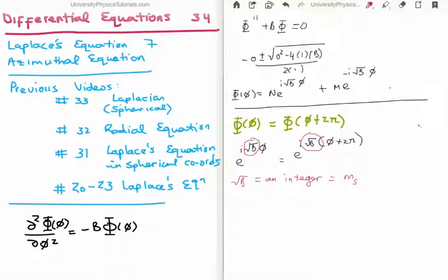So the limits on m sub s are as follows. m sub s, well it can be 0, it can be plus or minus 1, it can be plus or minus 2, or anything up to infinity, or negative infinity as it is. So like I said, m sub s is the magnetic quantum number.